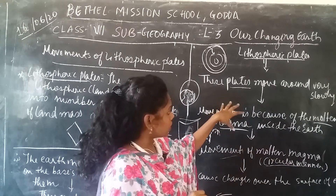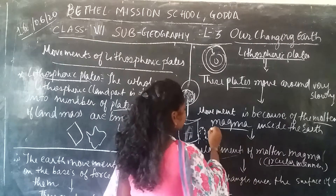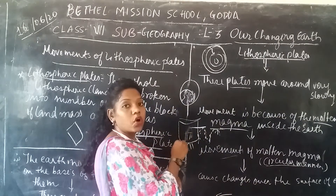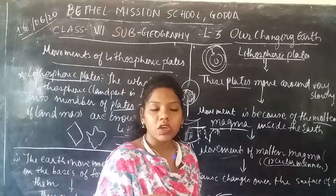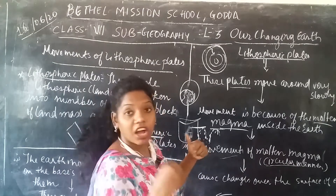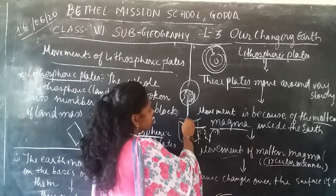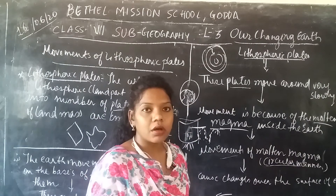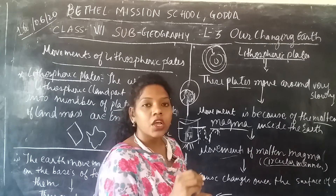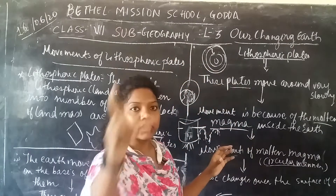Due to that circular motion, the lithospheric plates start to move away in different directions. If you want to experiment, put a piece of paper into boiling water — you can see the paper moves towards the sides of the container. This is how the molten magma causes the plates to move in a circular way.